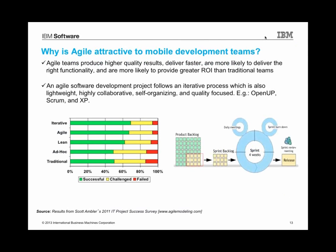Let's talk about more of the process behind the tools. Why is using agile techniques attractive to mobile development teams? In all of the customers that I've worked with and in all the data in the research, almost without fail, 90-plus percent of mobile development teams are using agile techniques like Scrum or Lean processes and other agile processes. They do this because using agile techniques results in higher quality results, helps you deliver faster, and you're more likely to get the functionality right. If you're just starting on mobile development, the best thing I could say is to start with an agile process.